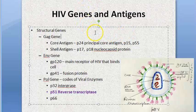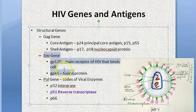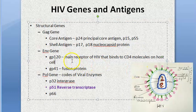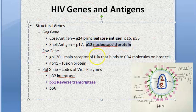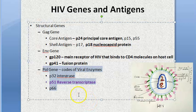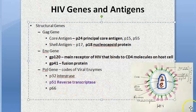There are three structural genes: the gag gene, envelope gene, and pol gene. The envelope gene produces GP120 and GP41. The principal core antigen is p24, and p18 is the nucleocapsid protein. The pol gene produces viral enzymes — p51 makes reverse transcriptase. Remember: p51 is reverse transcriptase.